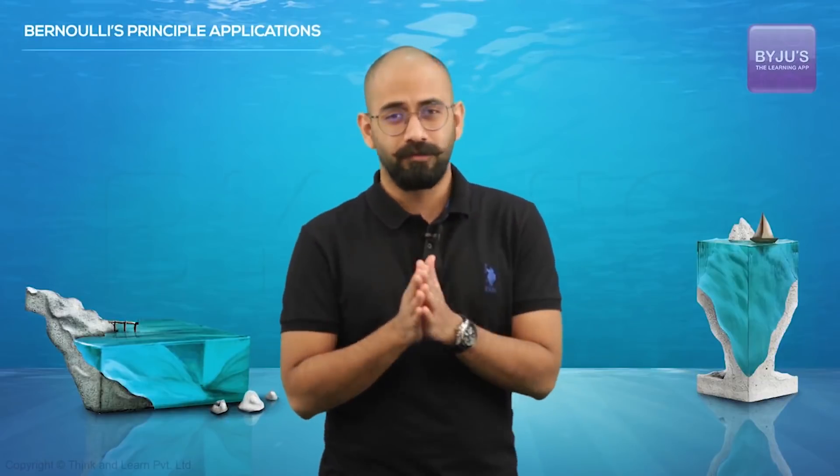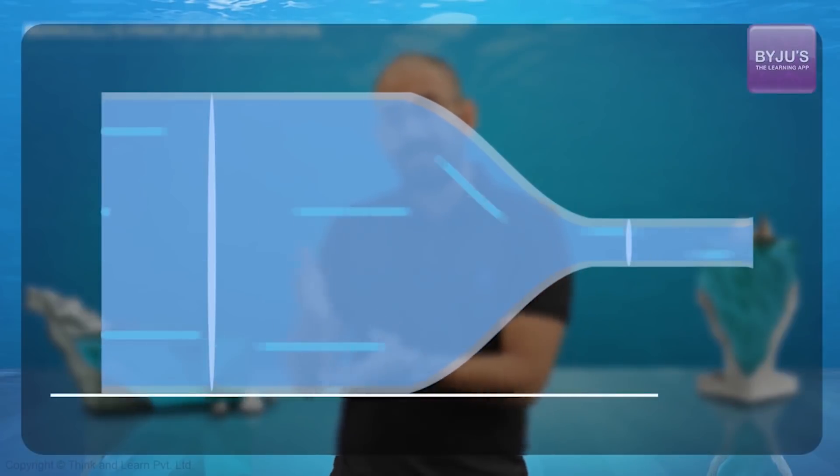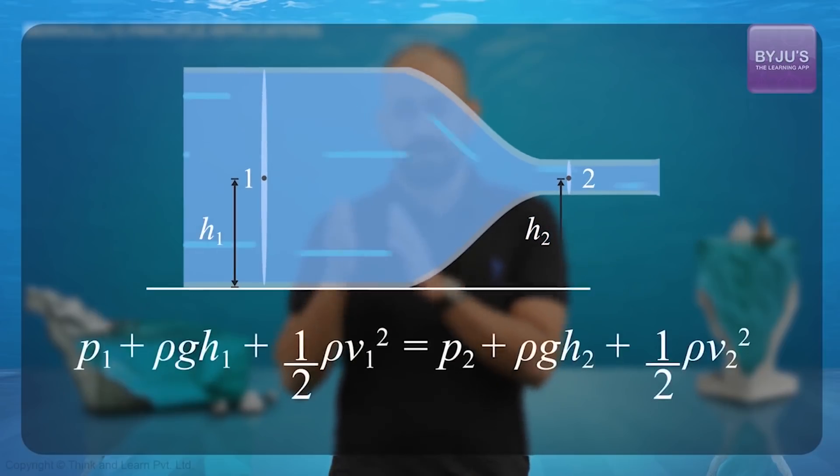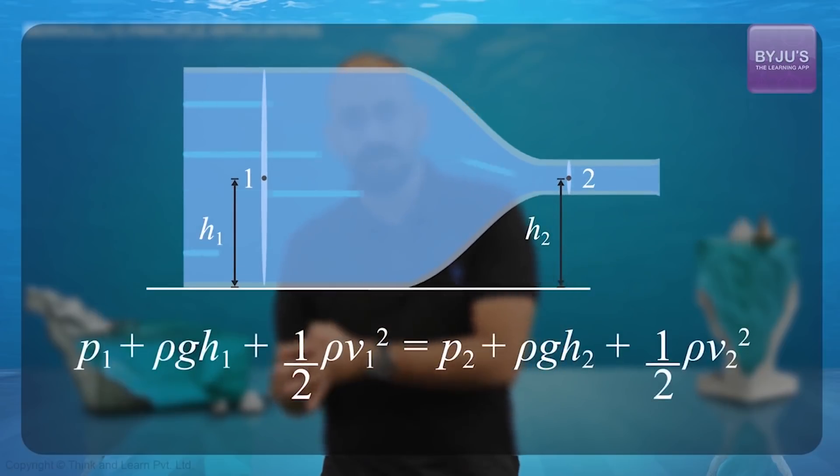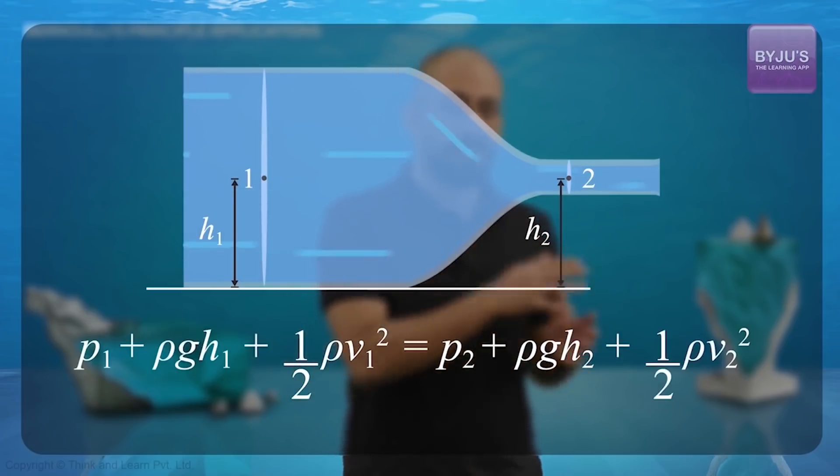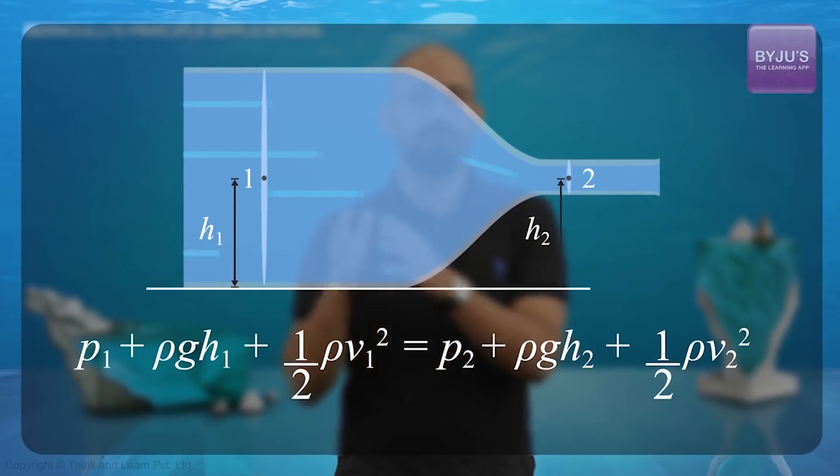So now, let's look at some important results of Bernoulli's equation. For that, let's consider a special type of tube, which has a greater area of cross-section over here and a lesser area of cross-section over here. Now if I apply Bernoulli's theorem to these two points, say 1 and 2, it will be P1 plus rho g h1 plus half rho v1 squared should be equal to P2 plus rho g h2 plus half rho v2 squared.